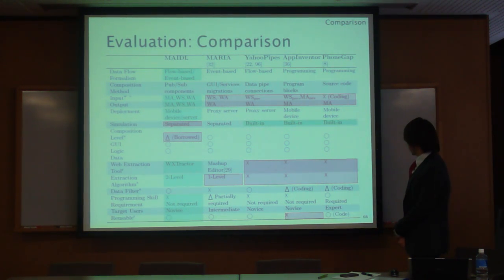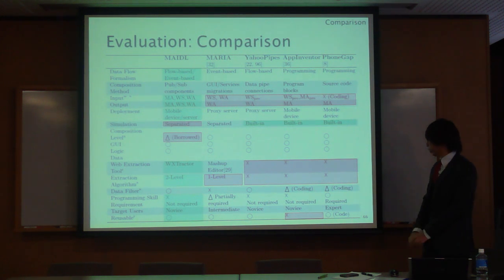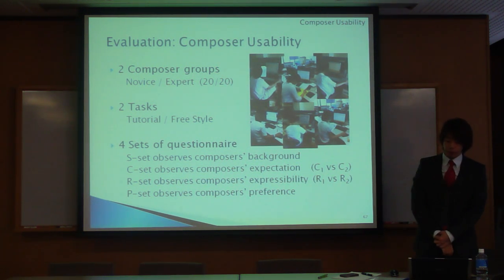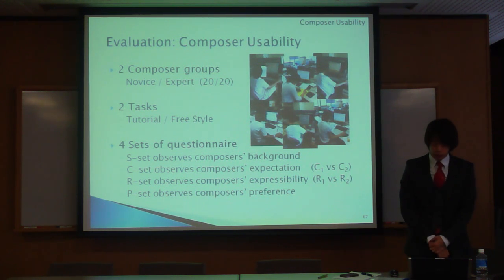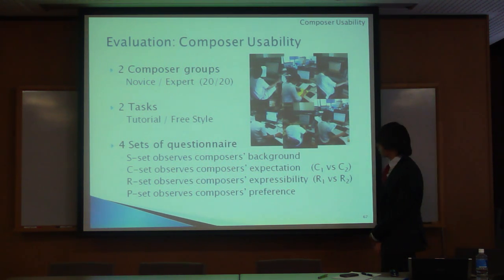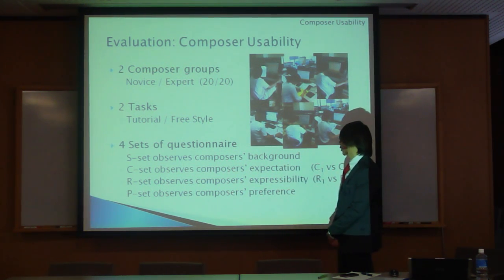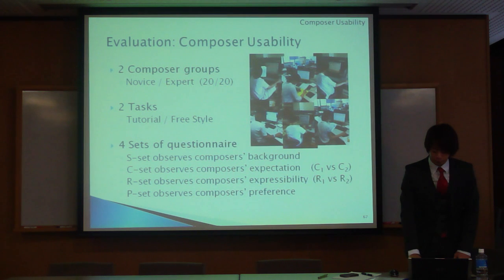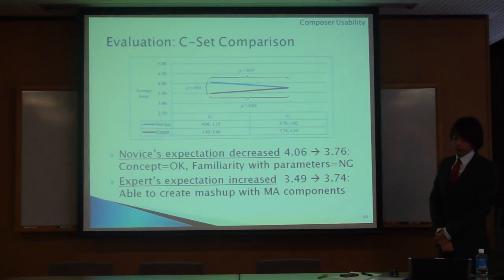In the evaluation concerning usability, we evaluated our approach with 40 composers divided into two groups: 20 novices and 20 expert composers. Composers were requested to perform two tasks: a tutorial task and a feed style task. We took four sets of questionnaires — C set about composer background, C set about expectation, R set about expressibility, and P set about preference. We are going to report the results regarding expectation and expressibility.